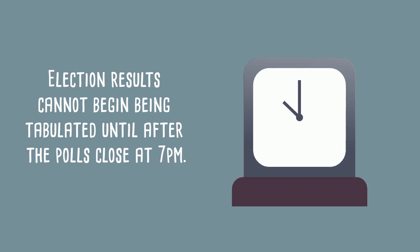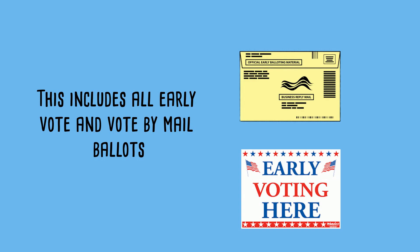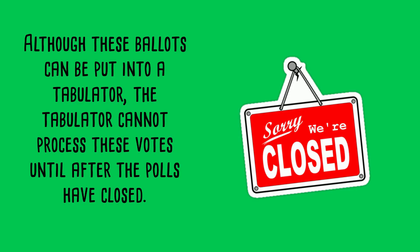Election results cannot begin being tabulated until after the polls close at 7 p.m. This includes all early vote and vote-by-mail ballots. Although these ballots can be put into a tabulator, the tabulator cannot process these votes until after the polls have closed.